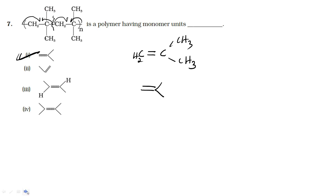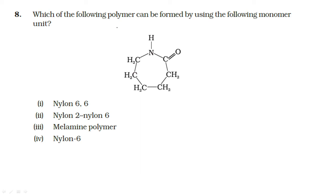Which polymer can be formed using caprolactam as a monomer? Caprolactam is the monomer of Nylon 6. Nylon 6 is formed from caprolactam and has amide linkage.